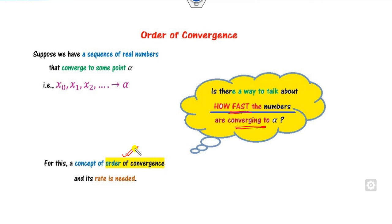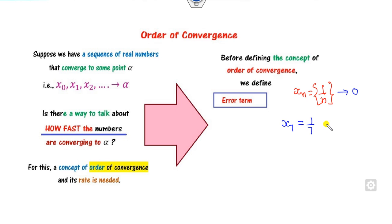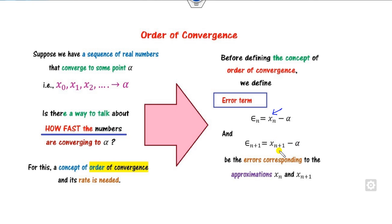Before we start with the order of convergence, let us first define the error. If you have the term xn — going back to the same example — if I consider x7, we know this sequence converges to 0. What is x7? It is 1/7, which is not exactly 0, only approximately 0. The difference — that 1/7 itself — is nothing but the error. We can define the error of the nth term and the error of the (n+1)th term.